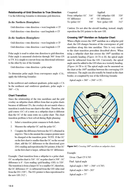Chart transition. Since the relationship of the true meridians and the grid overlay on subpolar charts differs from that on polar charts because of different CFs, the overlays do not match when a transition is made from one chart to the other. Therefore, the grid course (GC) of a route on a subpolar chart is different than the GC of the same route on a polar chart. The chart transition problem is best solved during flight planning. Step 1: select a transition point common to both charts. Step 2: measure the subpolar GC and the polar GC. Step 3: compute the difference between the GCs. This is the amount the compass pointer must be changed at the transition point. If the GC on the first chart is smaller than the GC on the second chart, add the GC difference to the directional gyro (DG) reading and reposition the DG pointer. If the GC on the first chart is larger, subtract the GC difference.